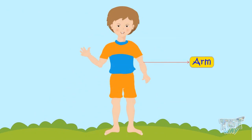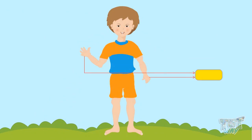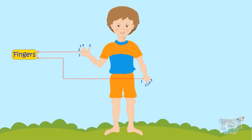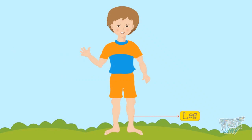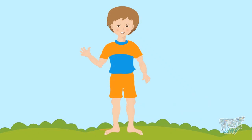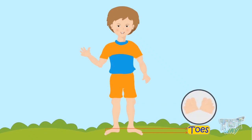This is our arm. These are our hands. And these little ones — these are our fingers. This is our leg. This is our knee, where you can bend. This is our foot. And these little ones — these are our toes.